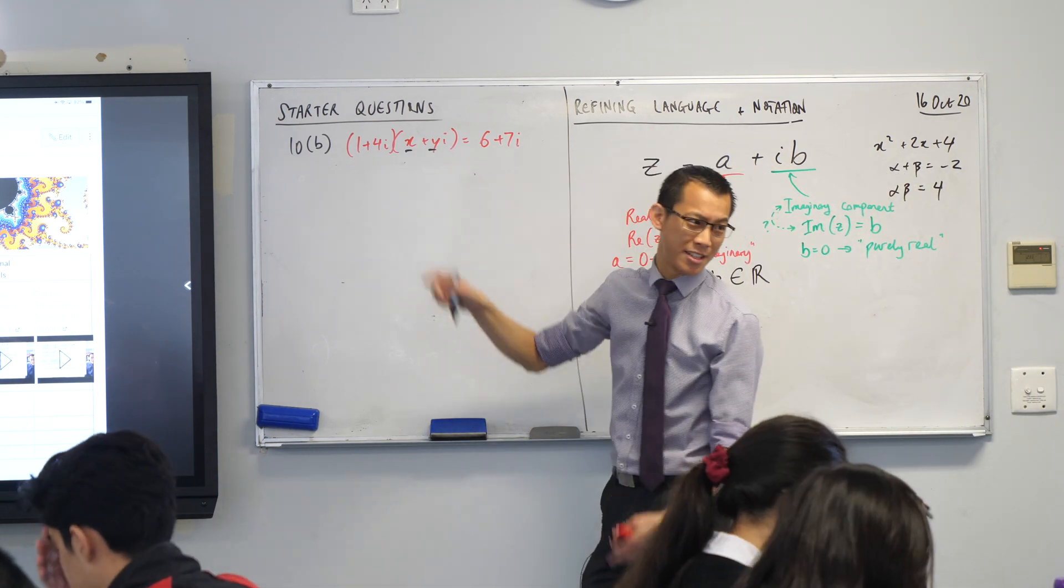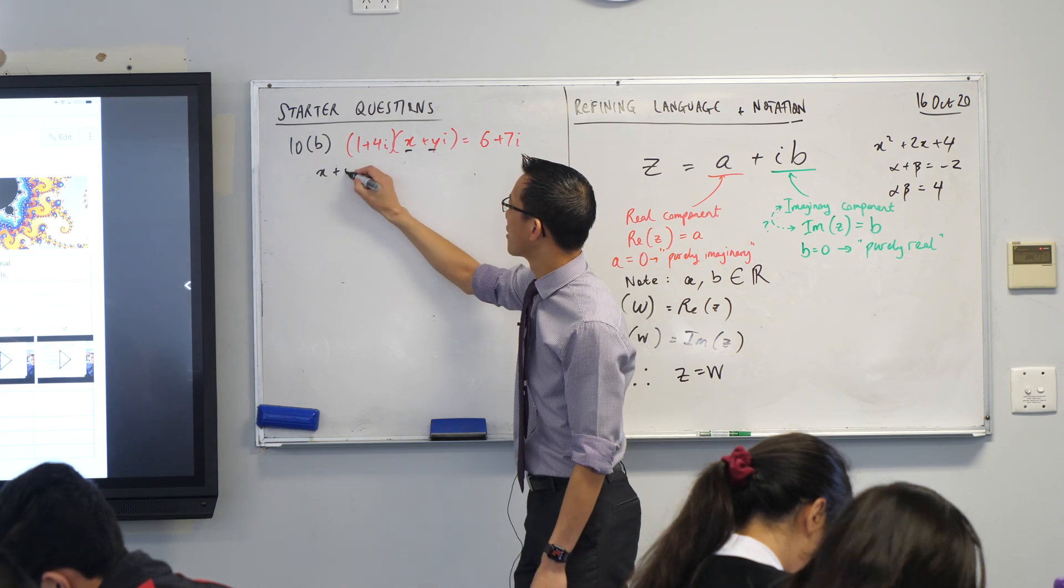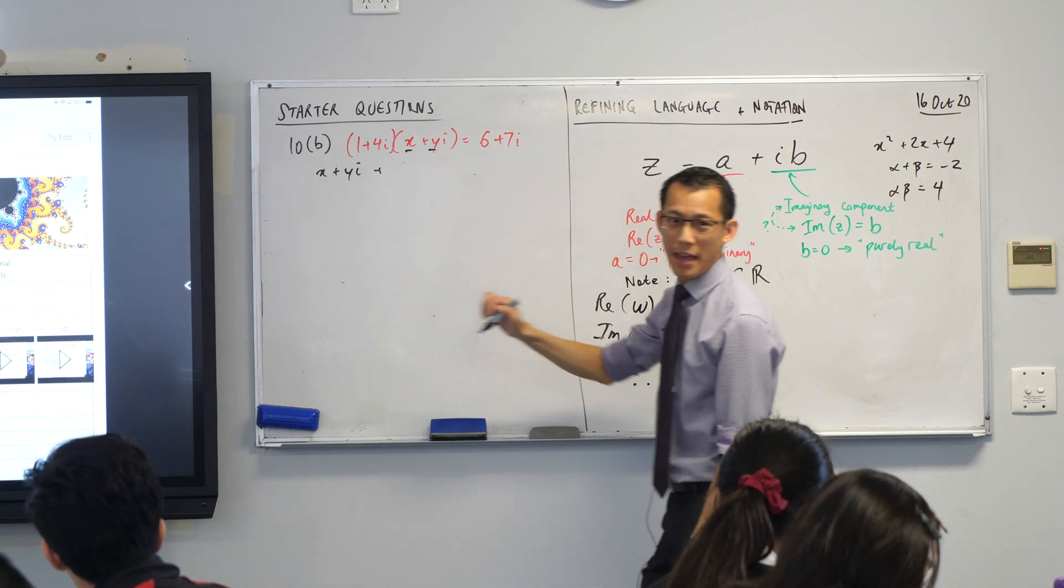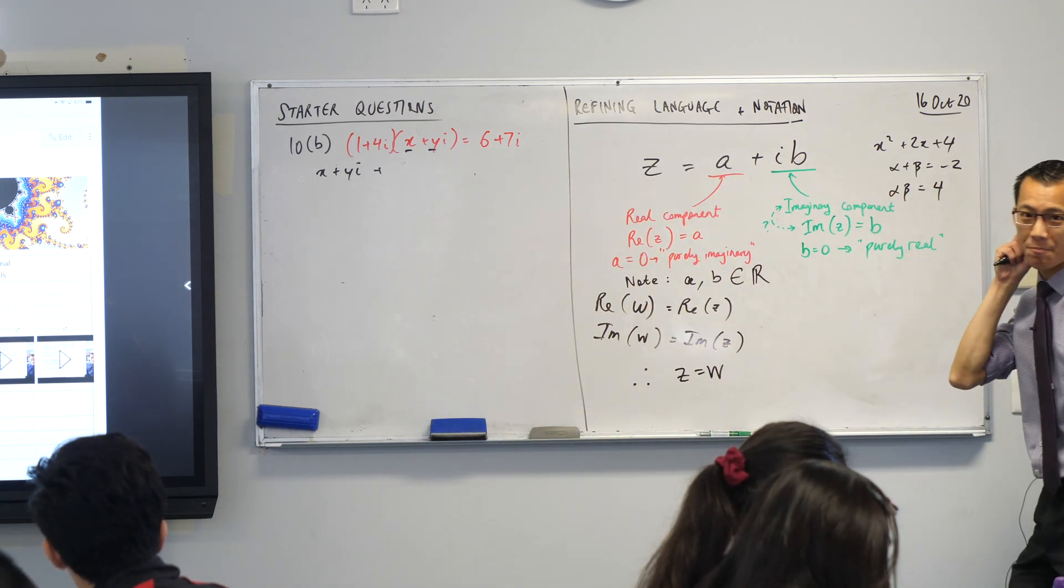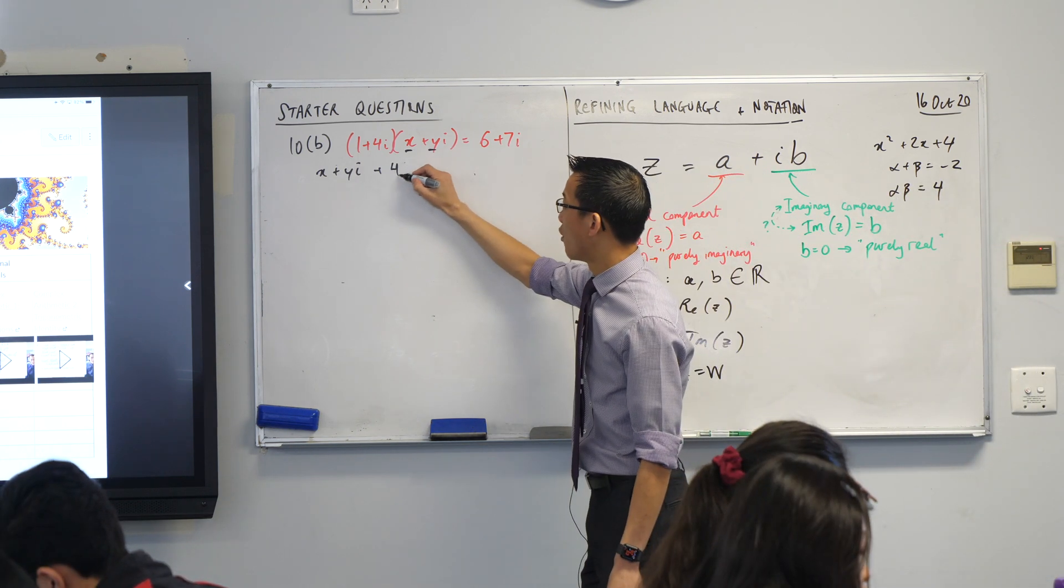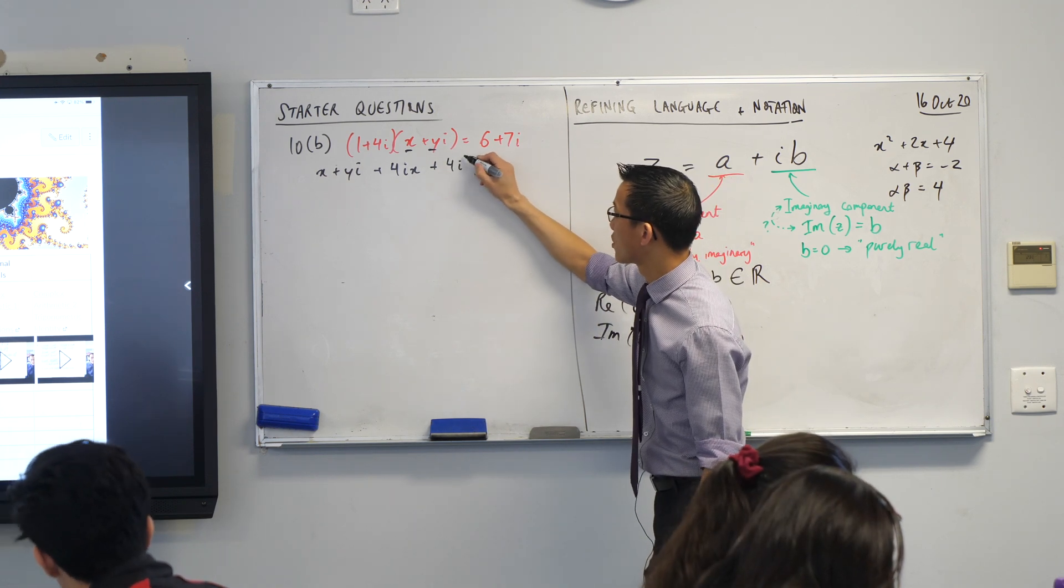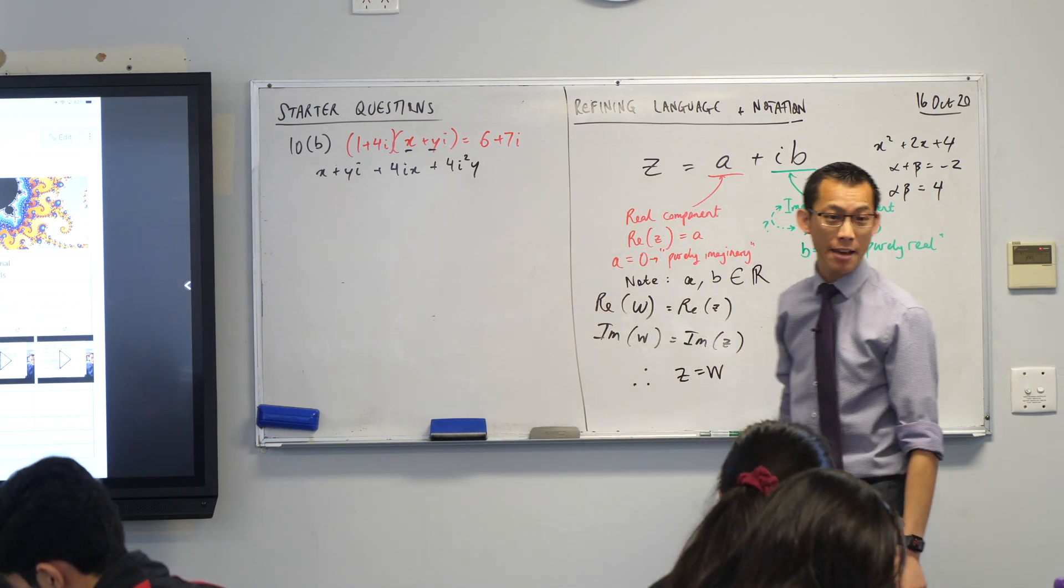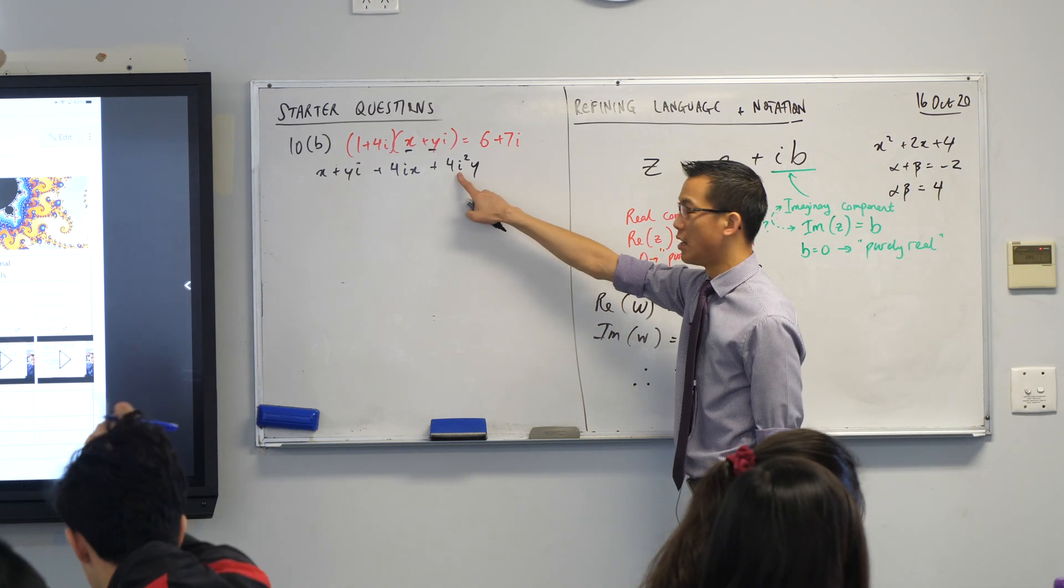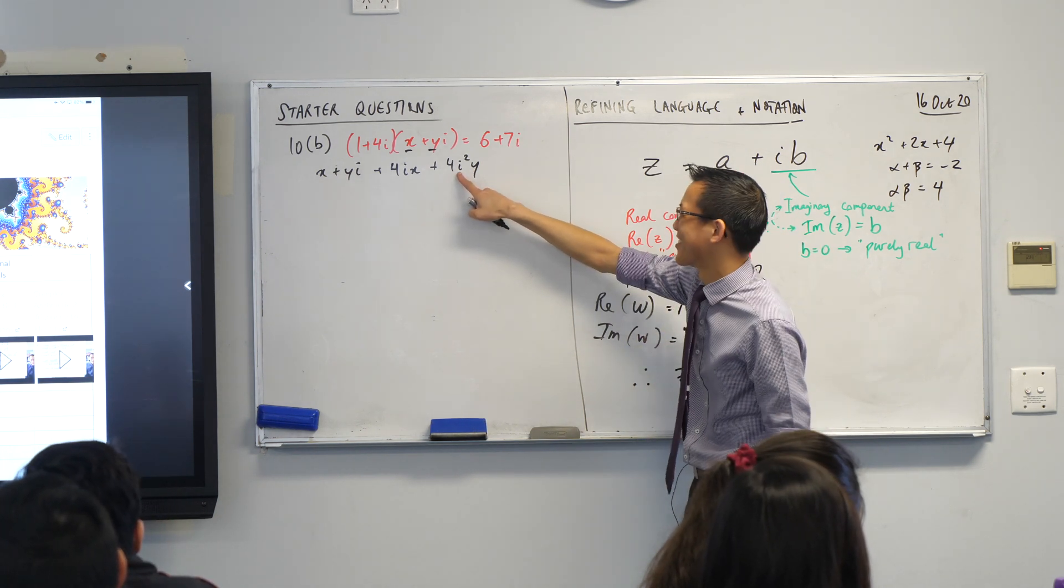So we're going to expand this guy out. It's mercifully simple. That's why I chose this example. So we're going to start with one lot of that second pair of brackets, plus, help me expand, the next part. What are we going to get here? 4ix plus 4i squared y. I'm pretty happy with that. You're going to get to the point where you're comfortable enough to just go to negative 1 in your brain after you do this a lot.